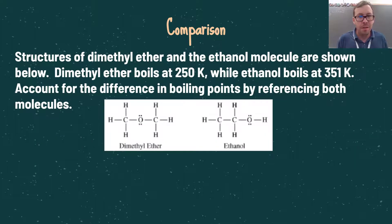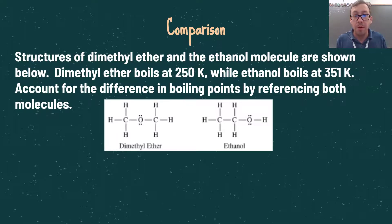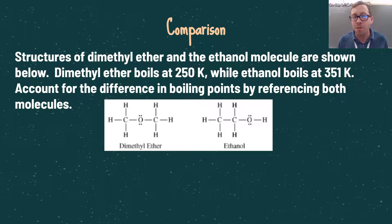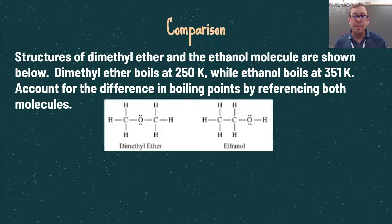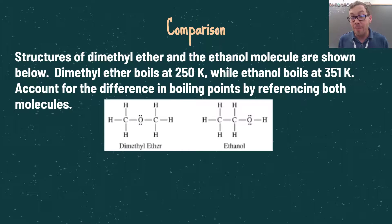Let's look at an example: dimethyl ether boils at 250K while ethanol boils at 351K — account for the difference in boiling points. First, ethanol is a molecule so it has London dispersion forces. It also has an OH group off to the side, making the molecule asymmetric and polar, so it has dipole-dipole forces. Furthermore, that oxygen is covalently bonded to a hydrogen, so ethanol also has hydrogen bonding.